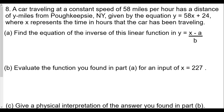Question number eight: a car traveling at a constant speed of 58 miles per hour has a distance of y miles from Poughkeepsie, New York, given by the equation y equals 58x plus 24, where x represents the time in hours the car has been traveling. Find the equation of the inverse of the linear function in the form y equals x minus a over b.